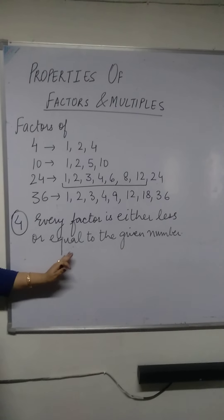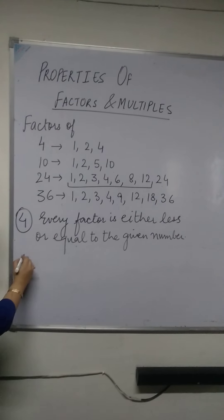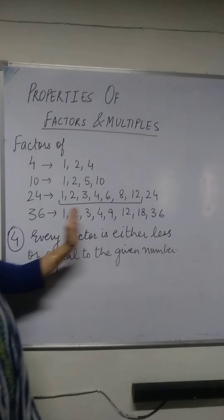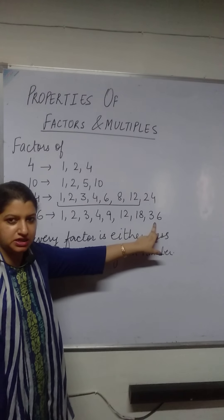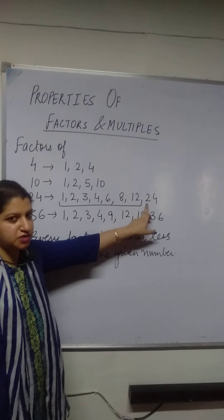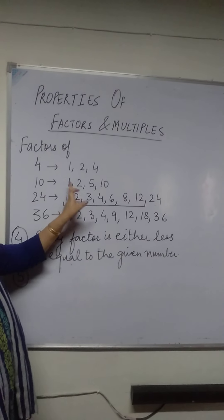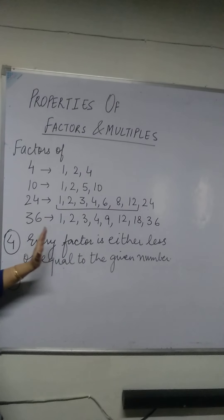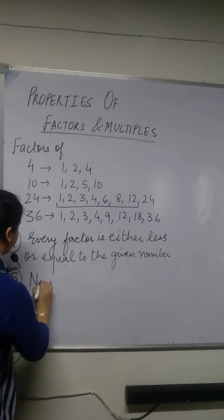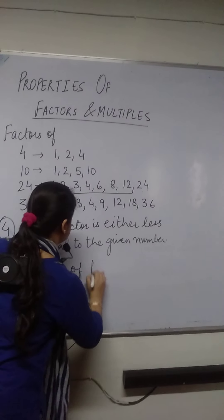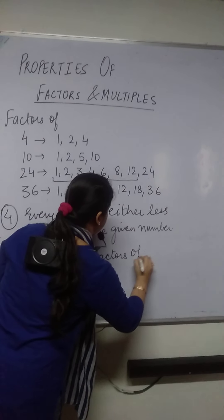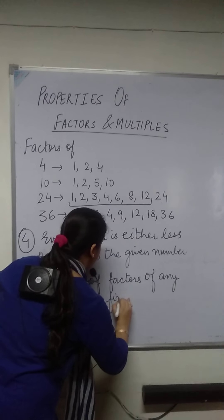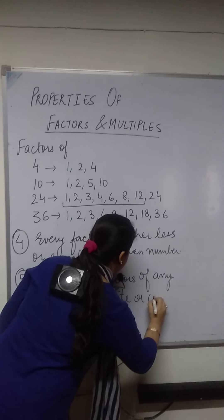Every factor is either less than or equal to the given number. The next property is, in all these factors of the given numbers, we are stopping at some particular point. There is no factor beyond 36 for 36, no factor beyond 24 for the factors of 24, and similarly for 4 and 10. We can count the number of factors for each and every number. So the fifth property says: the number of factors of any number are finite, meaning they are countable.